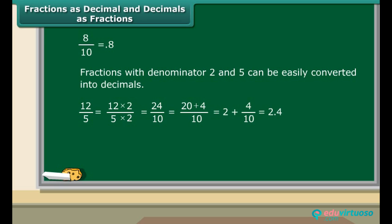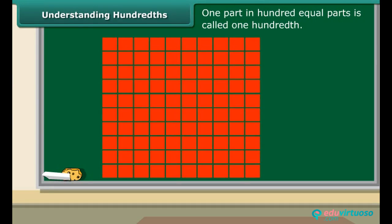Consider another example. Convert 3 upon 2 into a decimal. The denominator of the fraction is 2. To know the number of tenths involved, multiply and divide the fraction by 5. Thus, the new fraction is 15 upon 10. So we have 1 and 5 one-tenths, which make it 1.5. Another way to convert such fractions is to simply divide the numerator by the denominator.